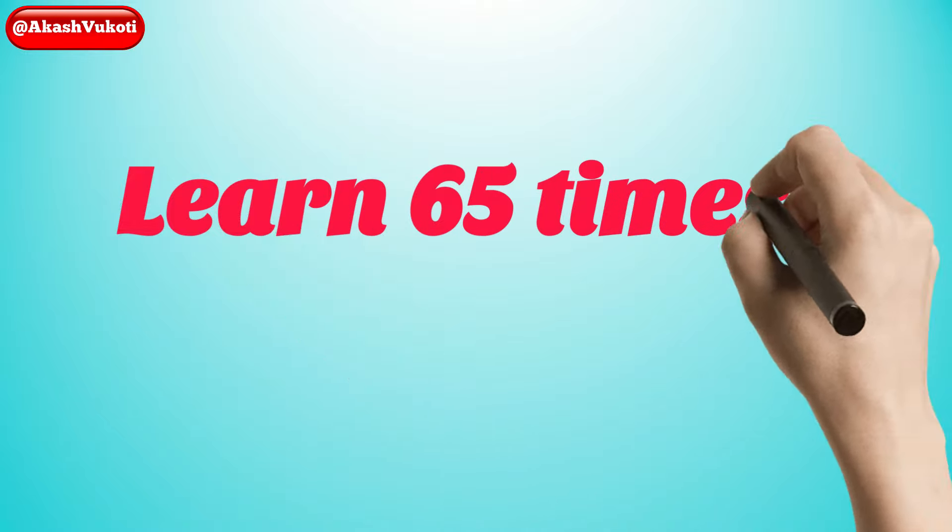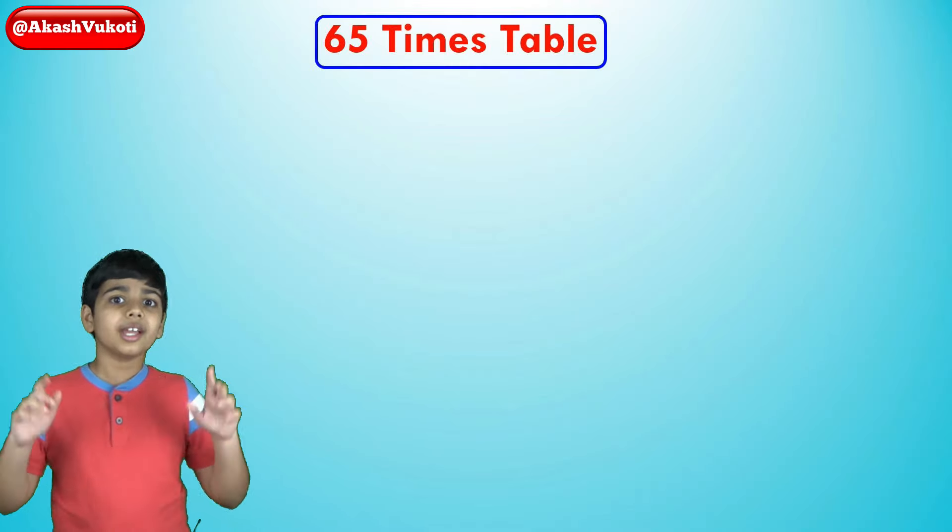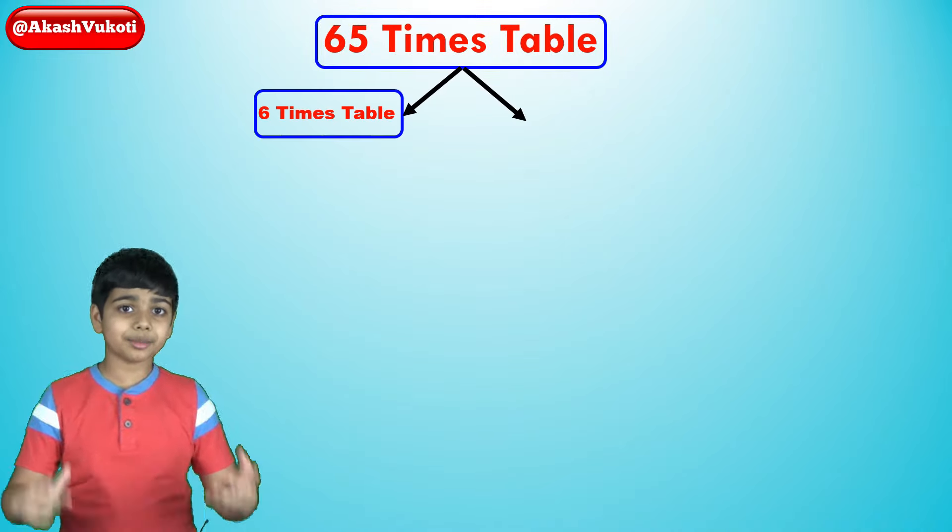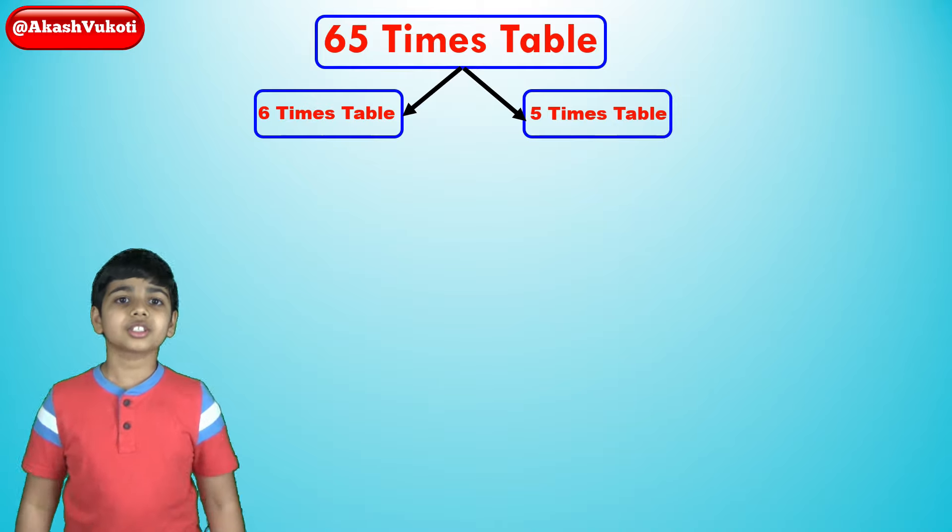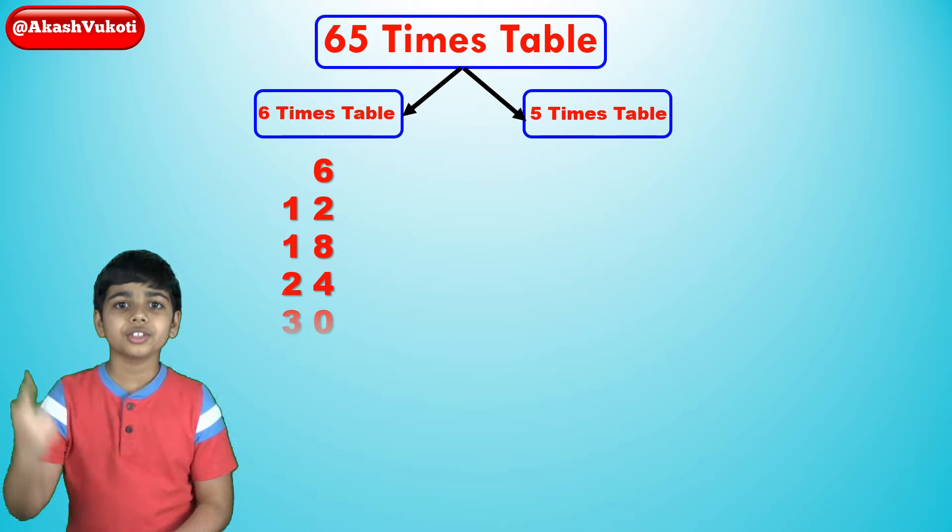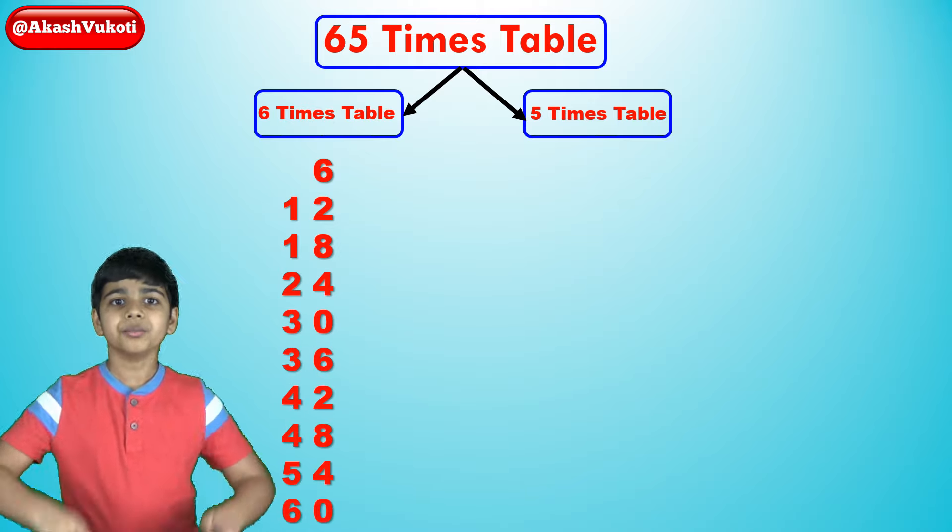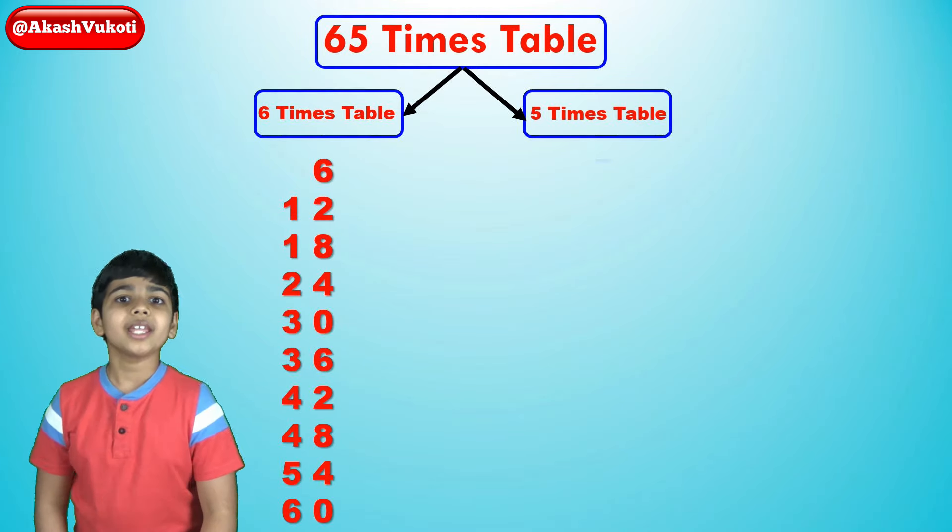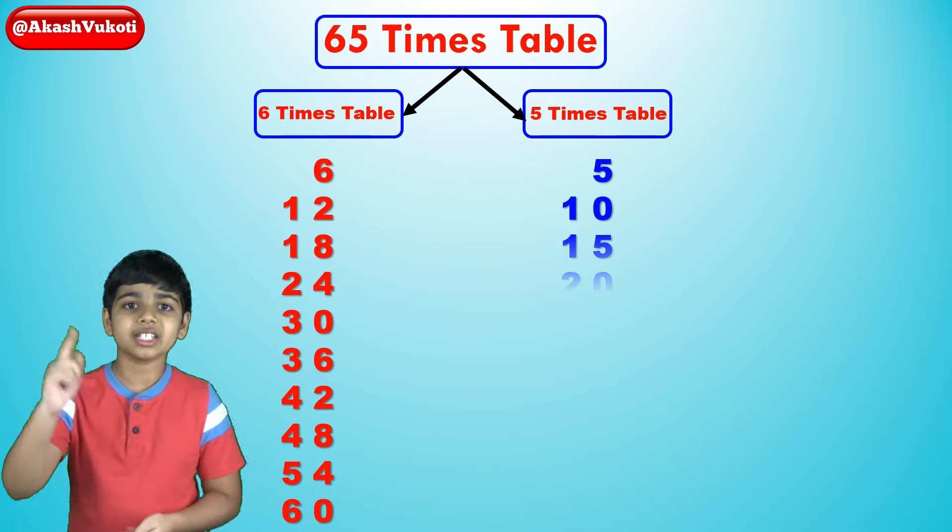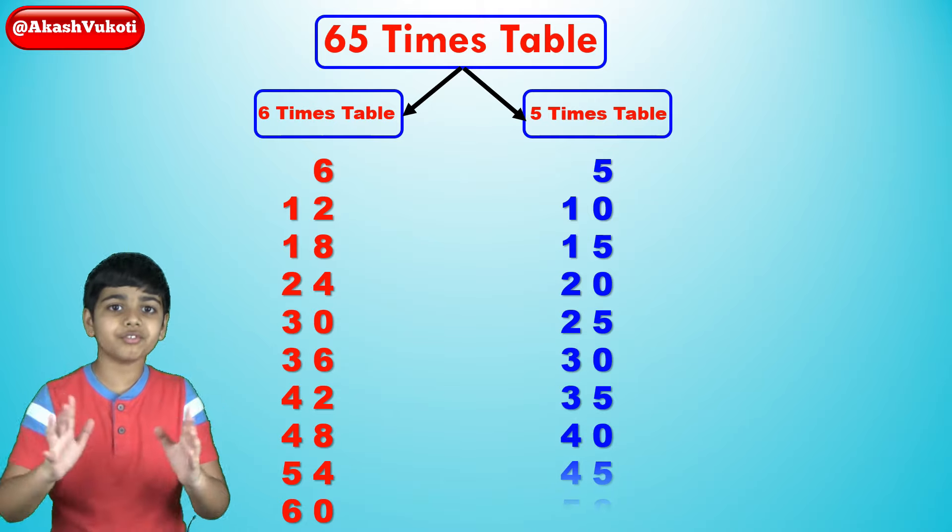Let's try another one, say 65. So, again, as usual, we'll write down the 6 times table and the 5 times table next to each other. So, that is 6, 12, 18, 24, 30, 36, 42, 48, 54, 60. That is the 6 times table. And then we do the 5 times table, that goes 5, 10, 15, 20, 25, 30, and 35, 40, 45, and 50.